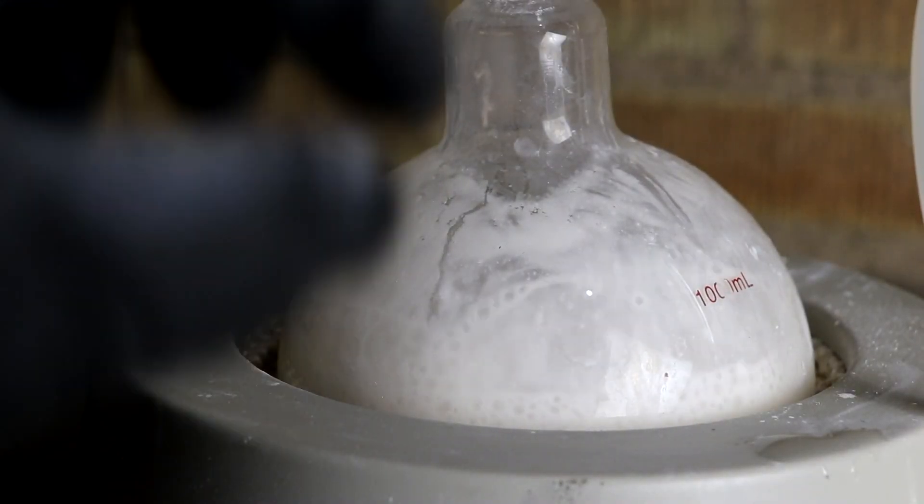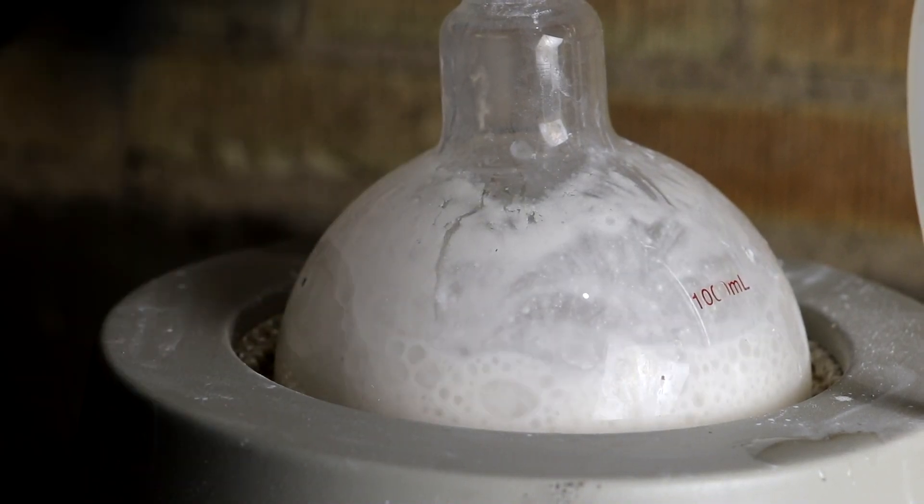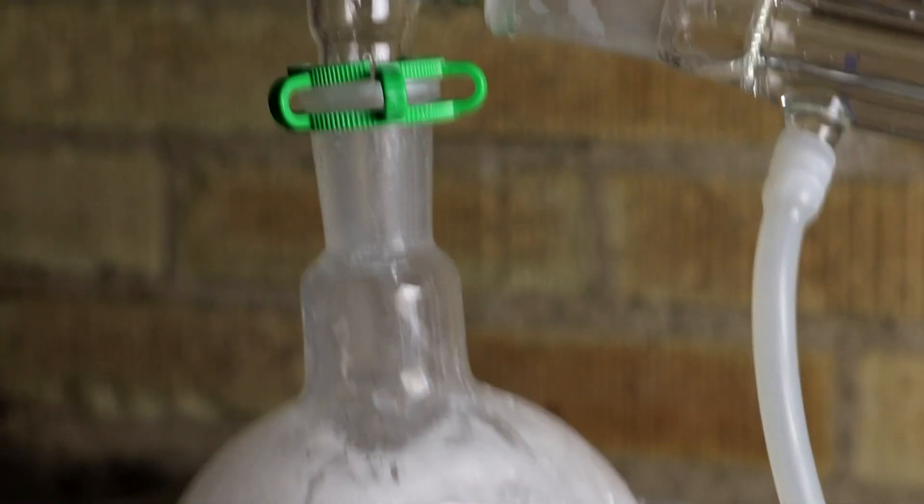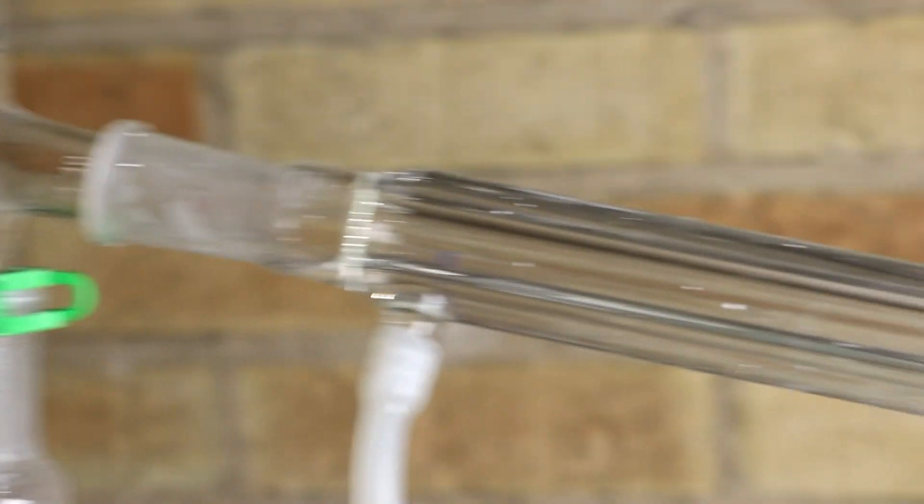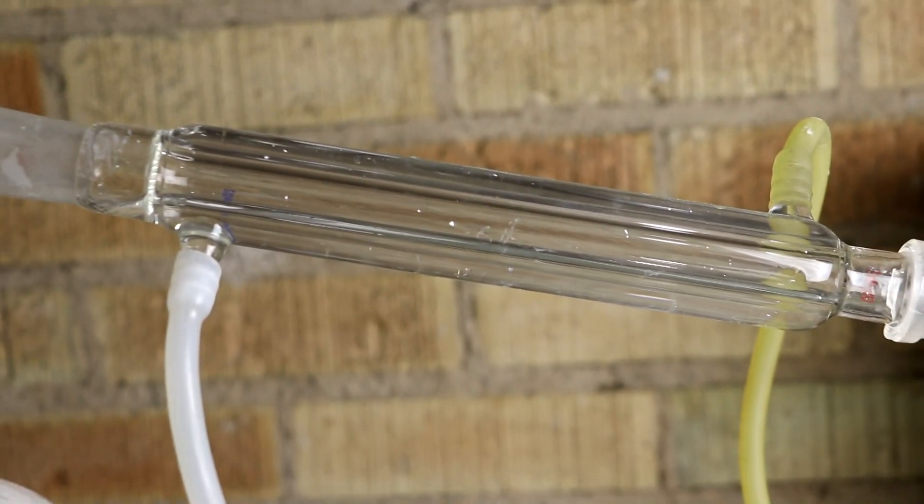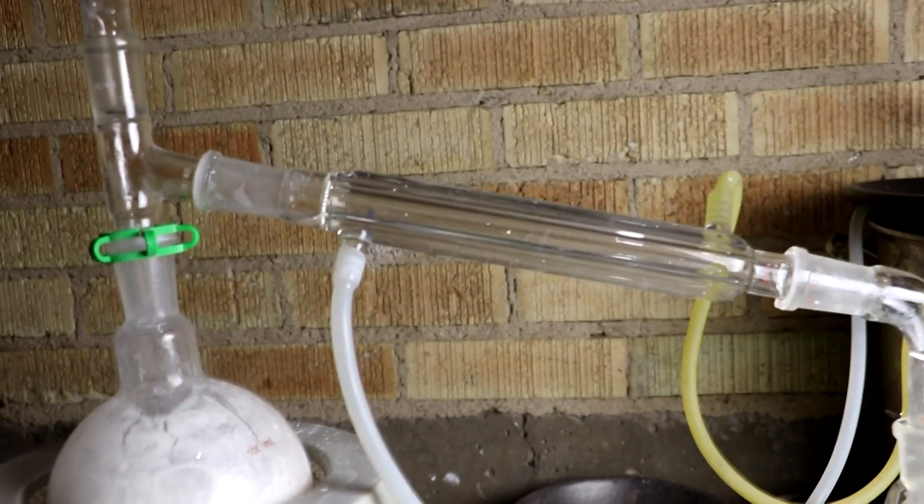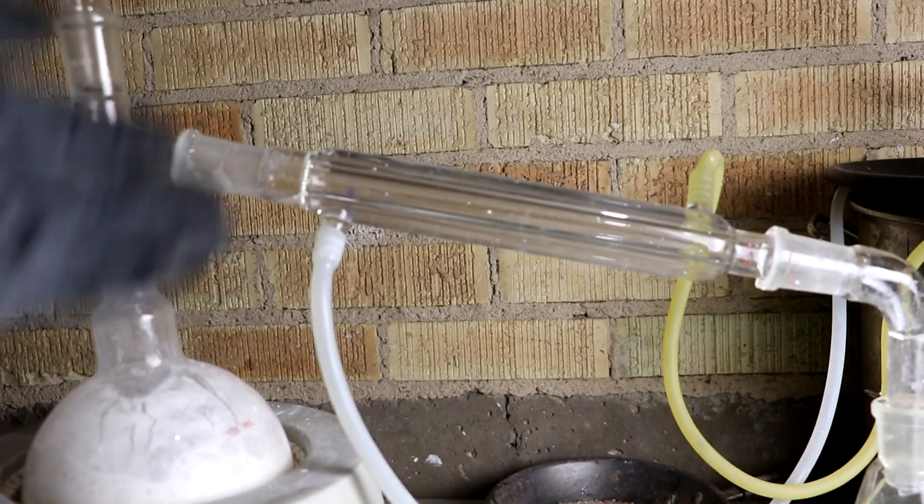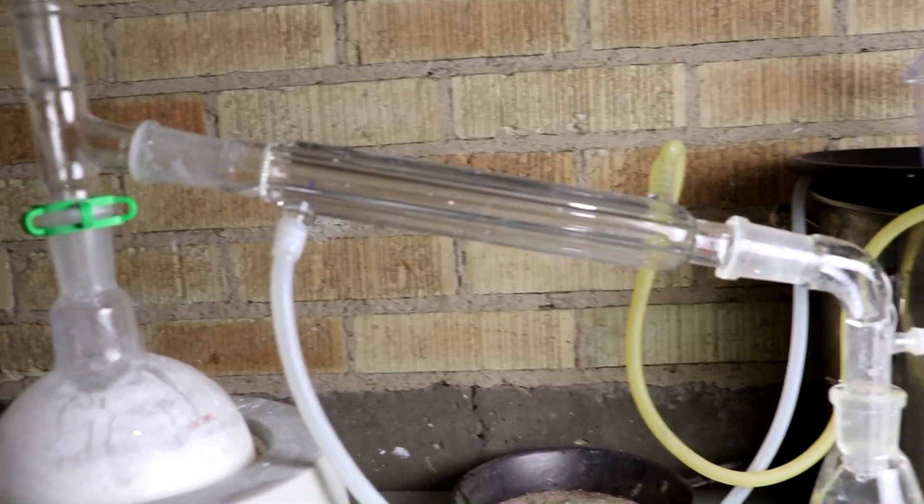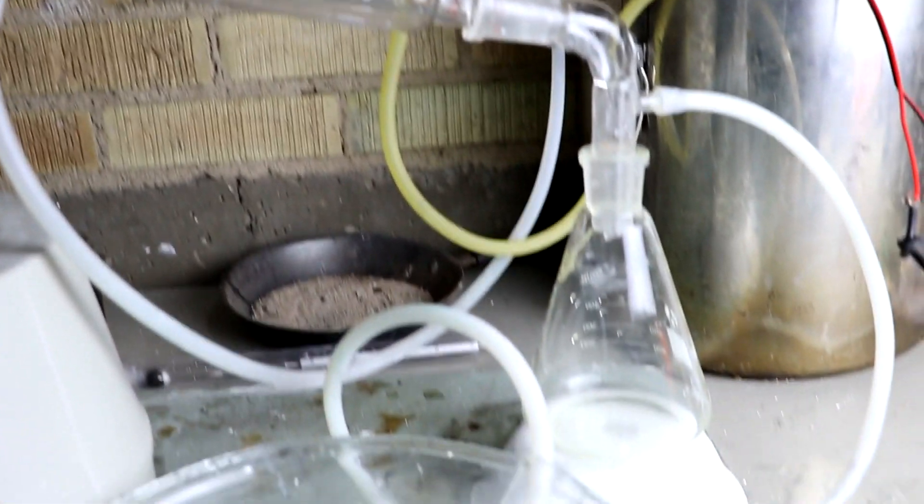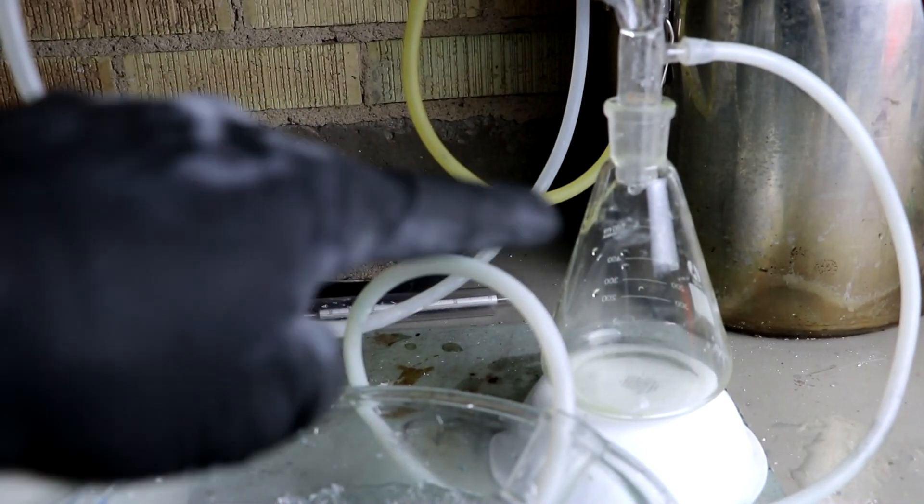As the solution heats up, the ammonia boils out along with some water vapor. So up here I have a condenser with some cold water running through it where the water vapor is condensing and probably absorbing most of the ammonia. That ammonium hydroxide solution then drips down into this flask here.